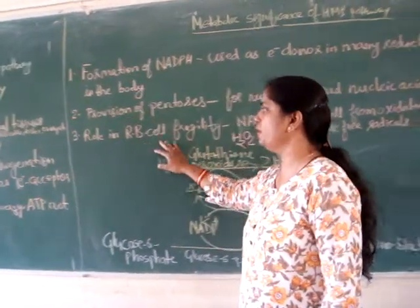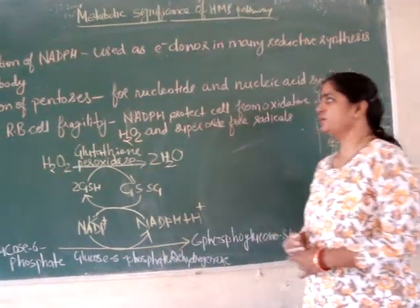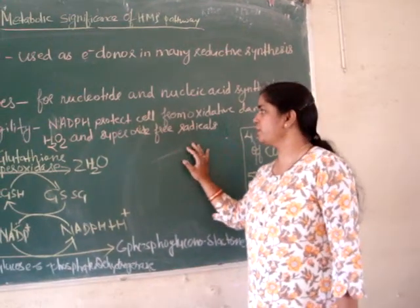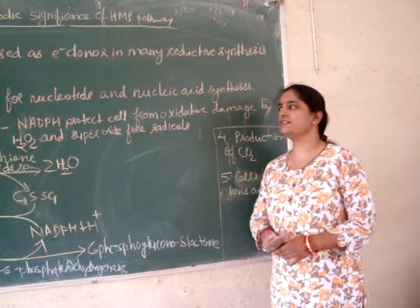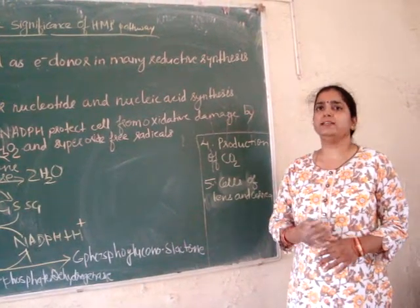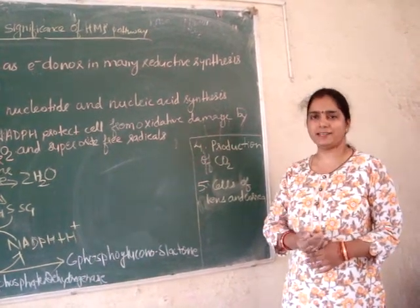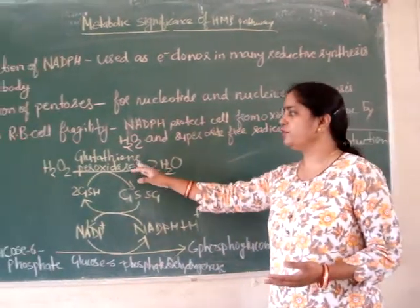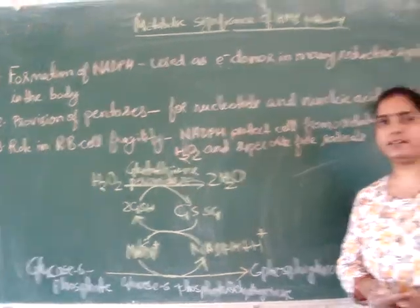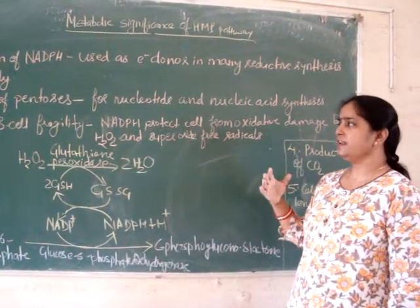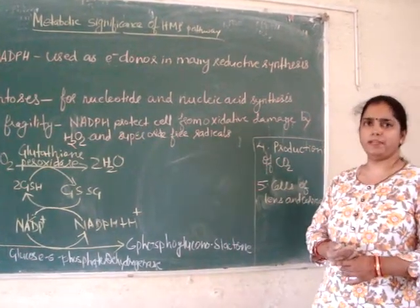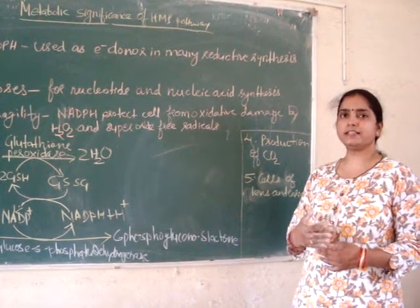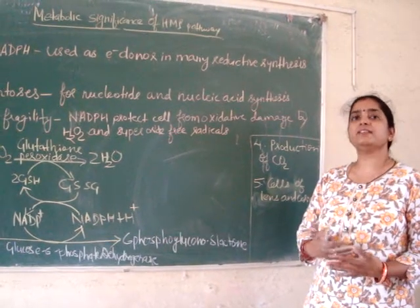A third and more important role of the PP pathway is its role in red blood cell integrity. The NADPH produced through this pathway protects cells from oxidative damage by hydrogen peroxide and superoxide free radicals. Hydrogen peroxide and other free radicals are produced through metabolic reactions and are removed through catalase activity, which degrades them into water and carbon dioxide. Catalase activity as well as glutathione peroxidase present in red blood cells require NADPH as an electron donor. If there is no NADPH, then due to peroxidation of the lipid membrane of red blood cells, it may cause hemolysis of the red blood cells, leading to hemolytic anemia.